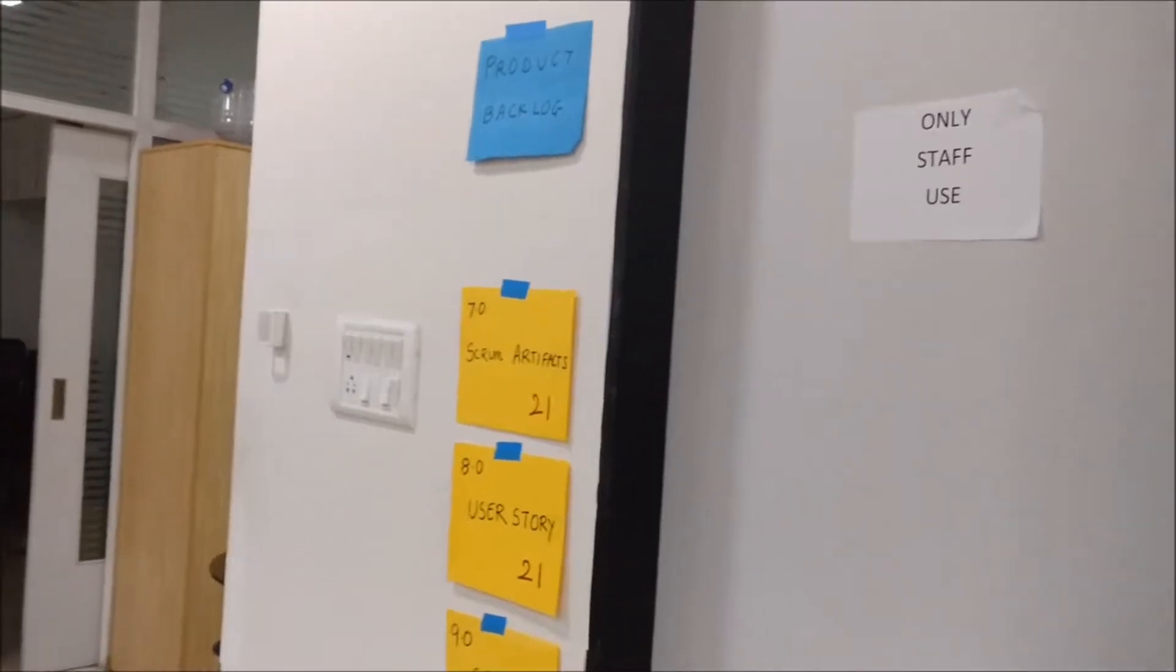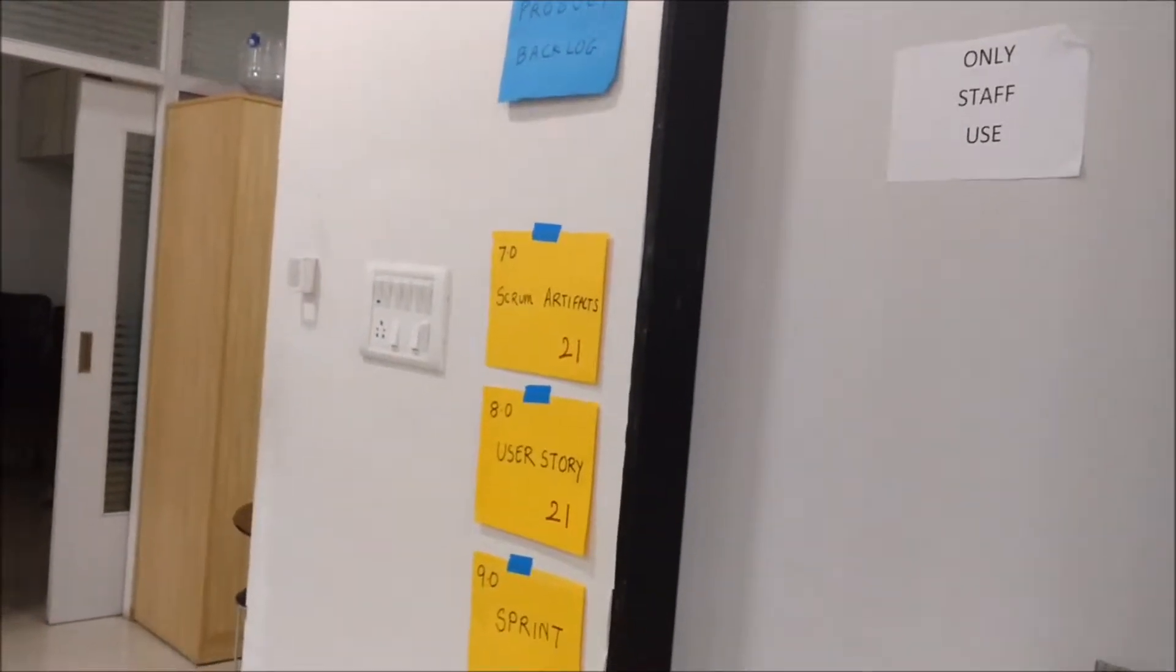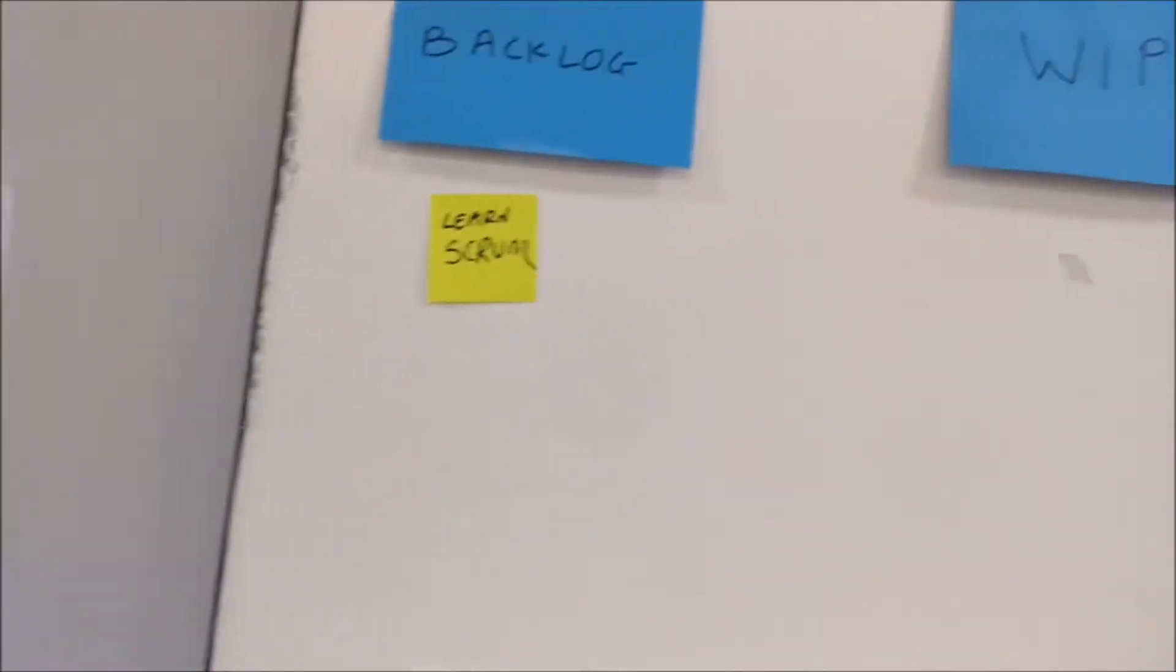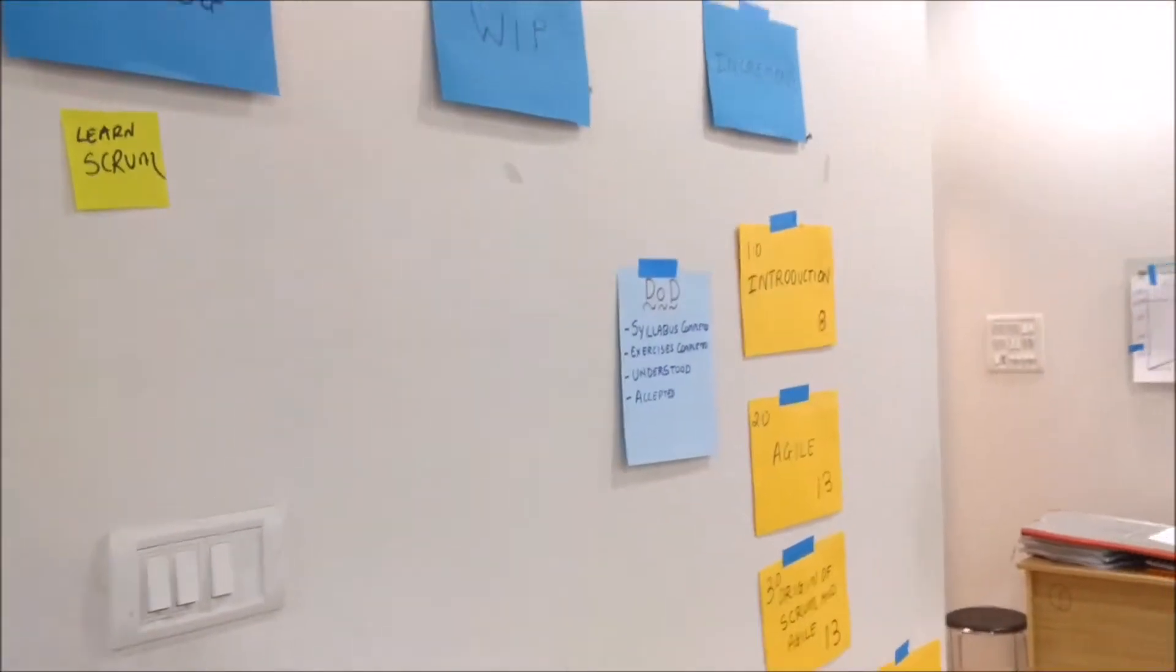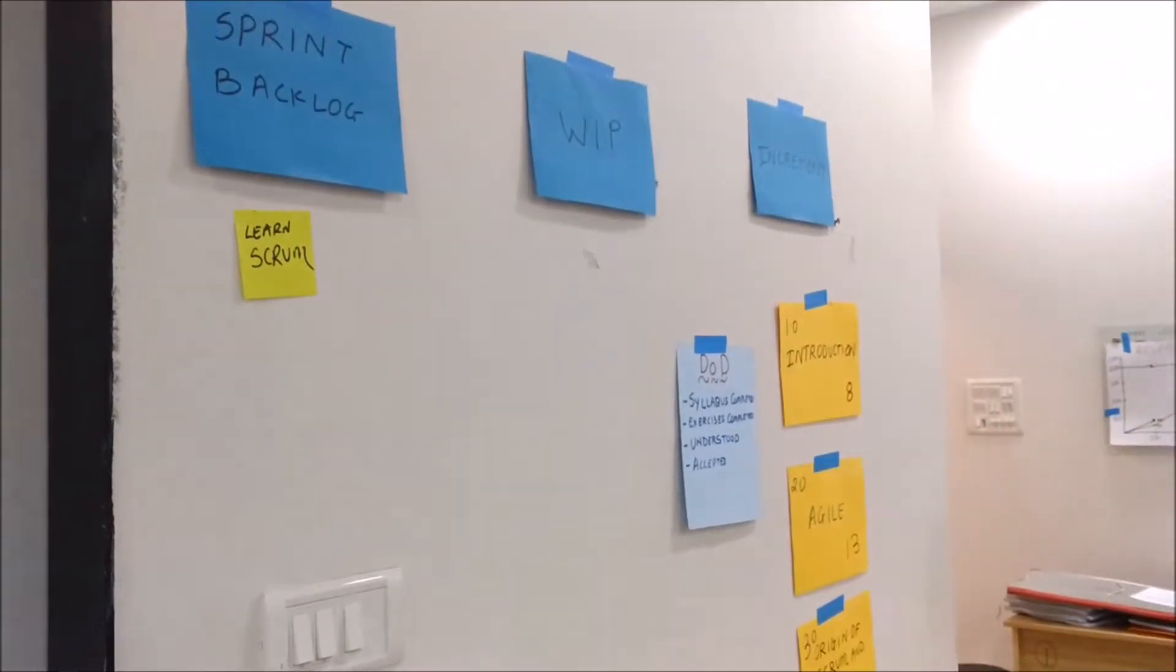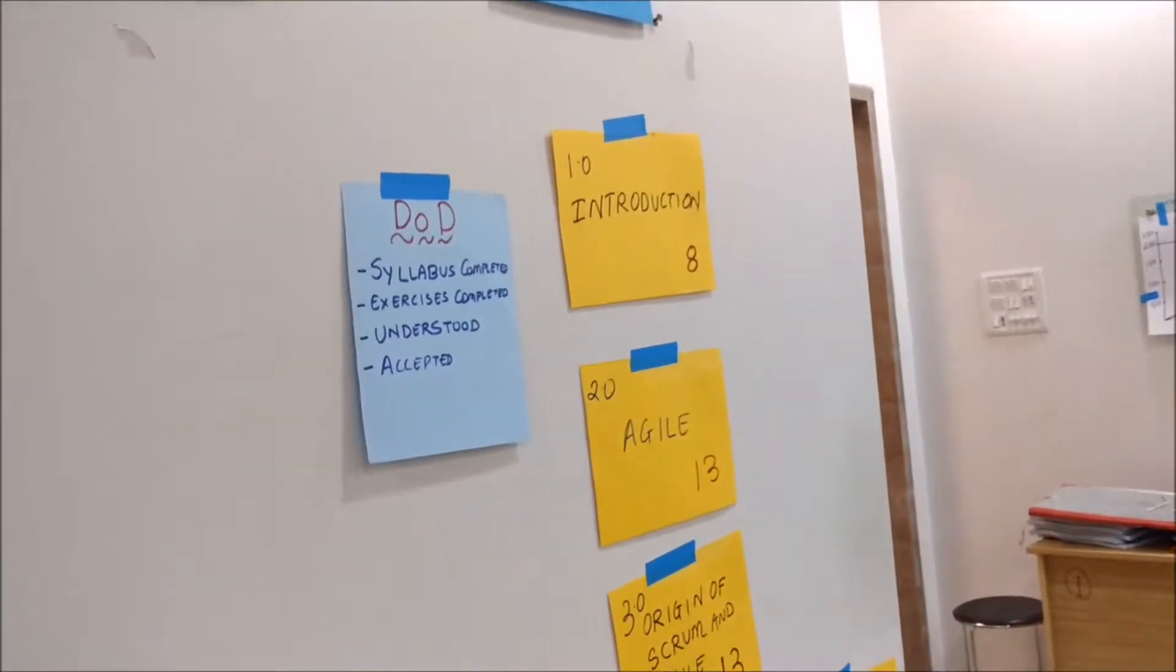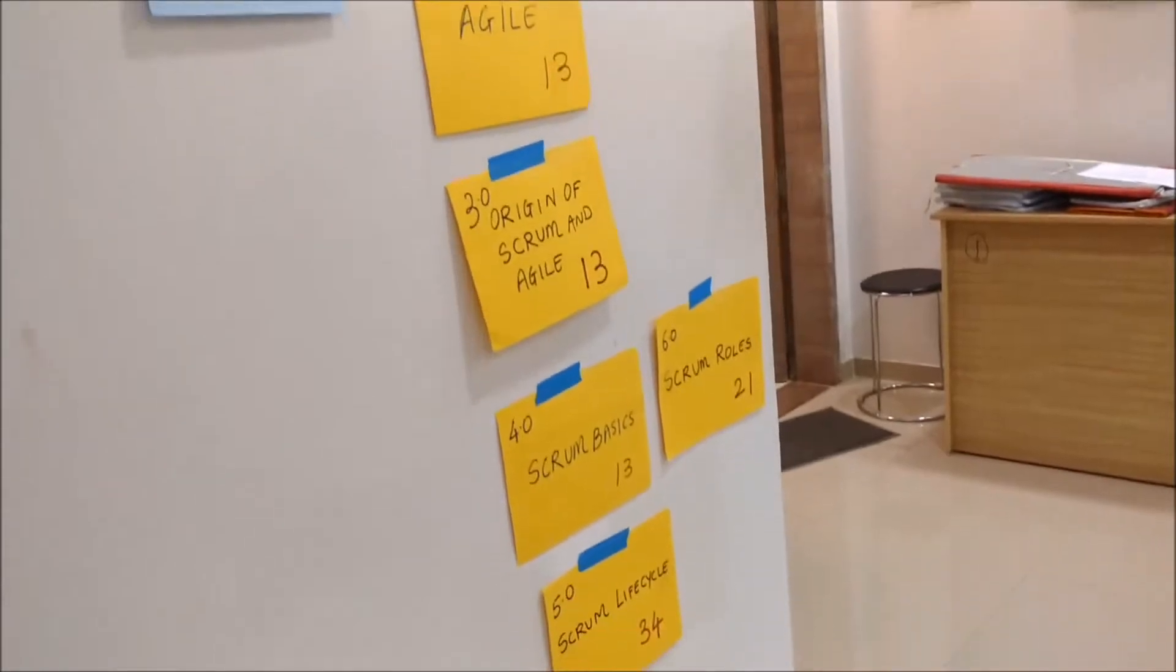On day one, I have simulated this product backlog on the wall with different product backlog items here. Then the sprint backlog is represented here on the wall with different items that we had taken in for work in progress, and then the increment that we have created at the end of day one.